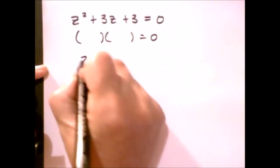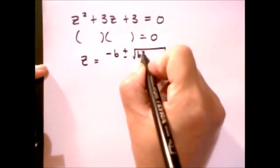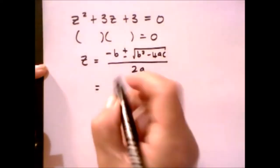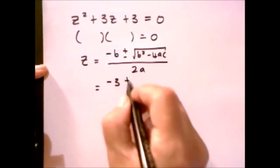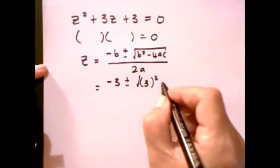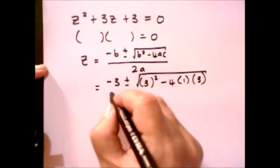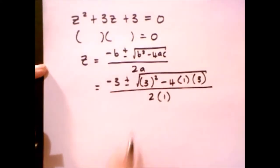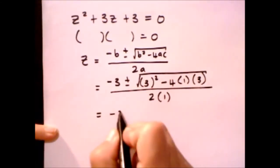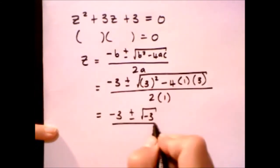In this case, we'll have z equals minus b plus minus the square root of b squared minus 4ac over 2a. Minus b is going to be 3, so that is minus 3 plus minus square root of 3 squared minus 4 times 1 times 3, everything over 2 times 1. That will be equal to minus 3 plus minus the square root of minus 3 over 2.